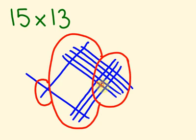We have 1, 2, 3, 4, 5, 6, 7, 8, 9, 10, 11, 12, 13, 14, 15 there. Carry the 1. 1, 2, 3, 4, 5, 6, 7, 8. Plus 1 is 9. And that 1 there is 195.